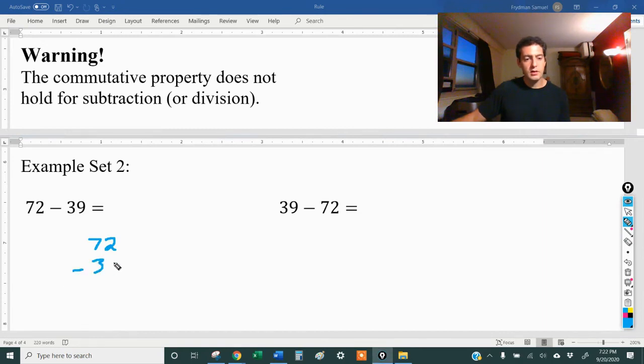I can't take 9 away from 2, so I'll borrow from the 7. That becomes a 6. I will put a 1 next to the 2, so now it's a 12. 12 minus 9 is 3, and 6 minus 3 is also 3. So I get 33. My first number was bigger, so that would be a positive 33.